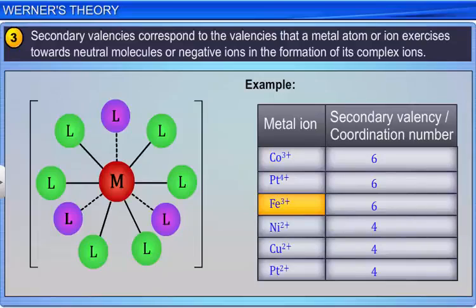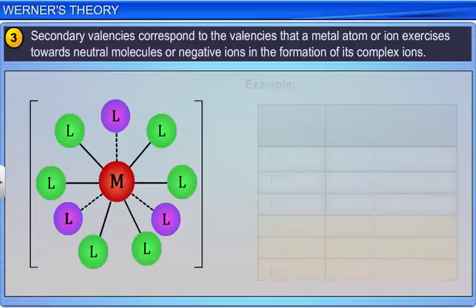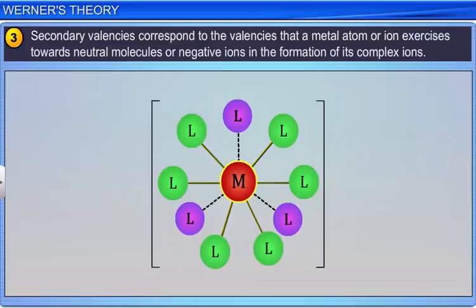Secondary valencies are non-ionizable. They are satisfied by neutral molecules or negative ions. The secondary valency is equal to the coordination number of the metal. For example, in the complex CoCl3·6NH3, the 3 chlorides are held by primary valencies and the 6 ammonia ligands are held by secondary valencies.